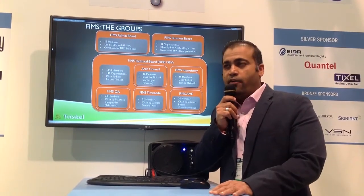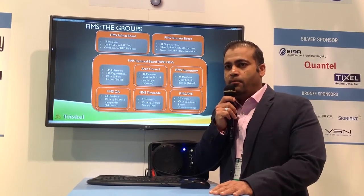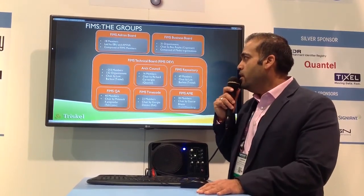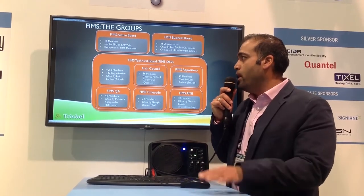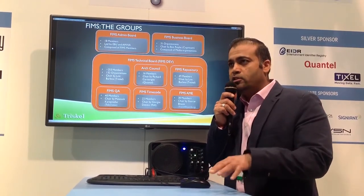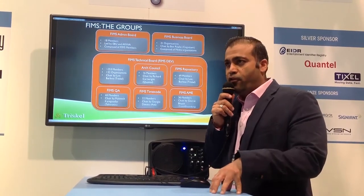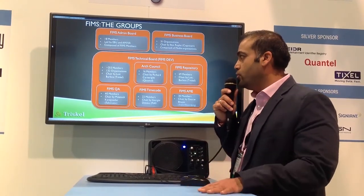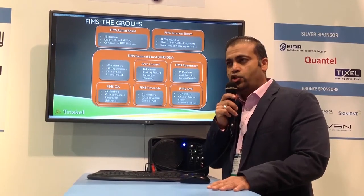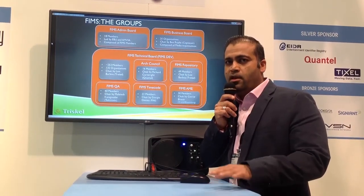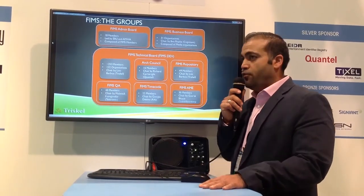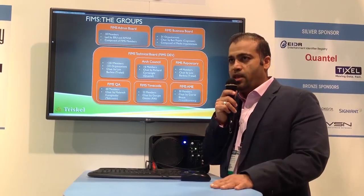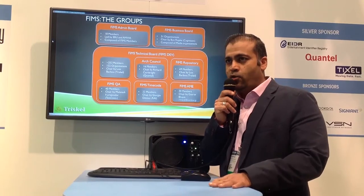The admin board's directive is to essentially do research on how to meet the needs of what the business board needs. Underneath the admin and the business board, we have the FIMS technical board. There are various subgroups currently leading efforts to develop various services. There's the architectural council, which is responsible for ensuring that all the different services being developed adhere to FIMS standards. There's the FIMS repository, FIMS QA, FIMS time code, and FIMS AME — each with their own leads.